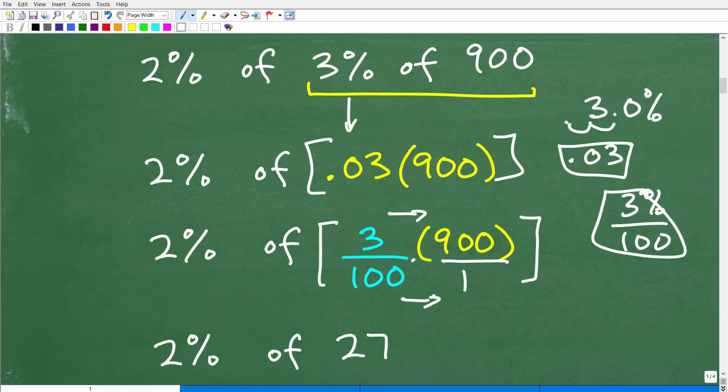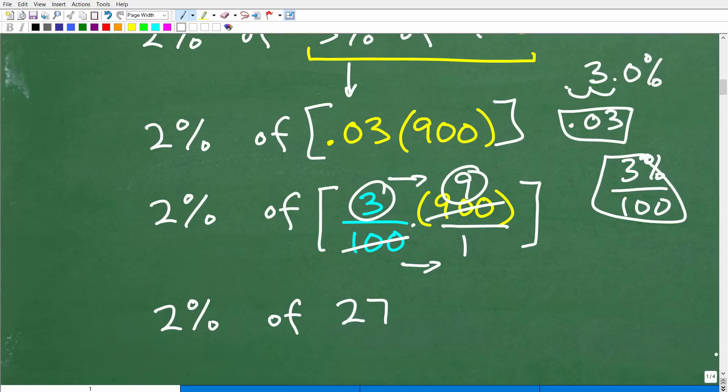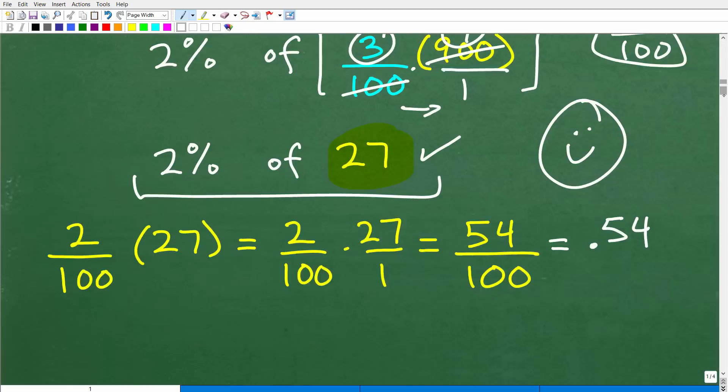And so this is super easy because 100 goes into 900 nine times, so 9 times 3 is, of course, 27. Or you can go 3 times 900, 2700, divided by 100. Either way, you're going to end up with the answer of 27. So now, again, I'm not using a calculator. Of course, I did this all in advance, but this is all basic arithmetic, nice, easy numbers to work with. So if you got to this point in the problem, I must go ahead and give you a nice little happy face for being pretty awesome at percent. But we're not done. We need to go ahead and figure out what 2% of 27 is.